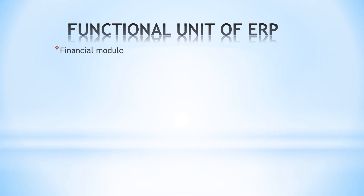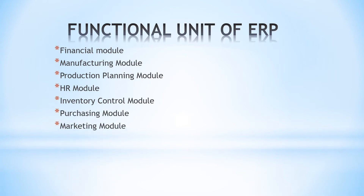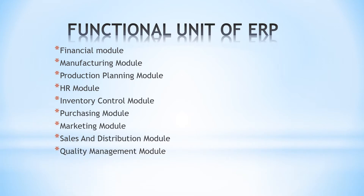Here we have the functional units of ERP. First is the financial module, second is the manufacturing module, third is the production planning module, fourth is the HR module, fifth is the inventory control module, sixth is the purchasing module, seventh is the marketing module, eighth is sales and distribution, and last but not least, the quality management module. This is what is called the ERP functional unit.